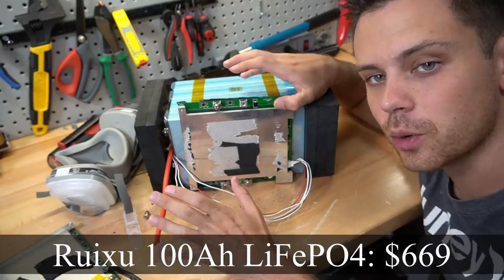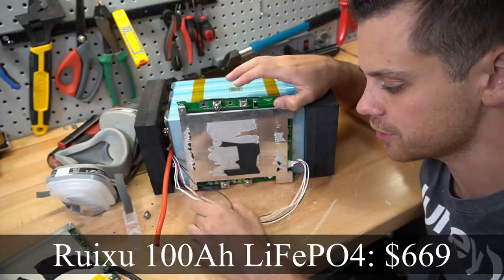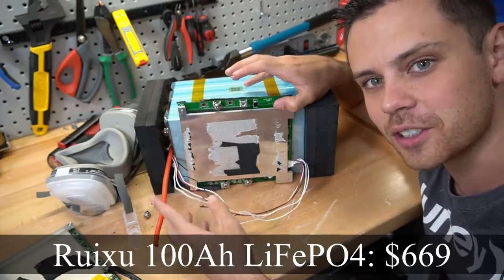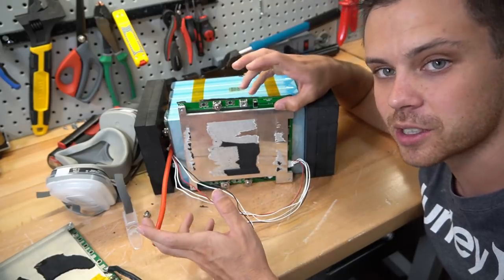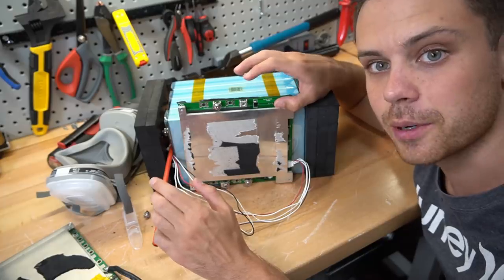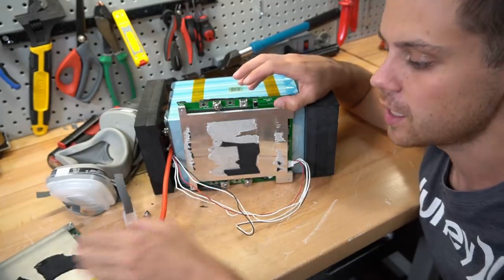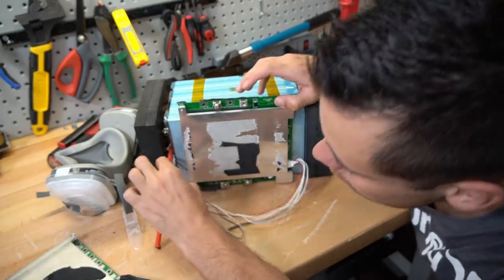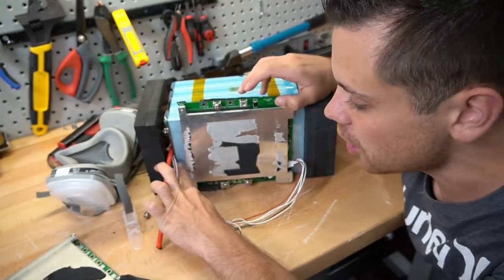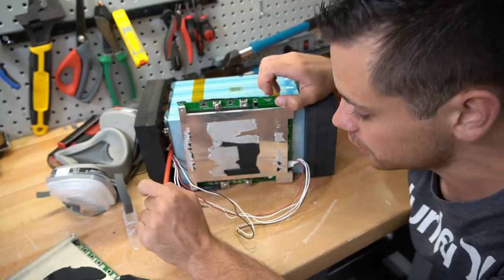So this is the new Ruxu 100 amp hour lithium iron phosphate. I wasn't interested in reviewing this, but I wanted to see what they updated. They promised my viewers and myself that they would have a low temperature charging protection BMS. This is pretty much the same BMS as they were using previously, but it's now updated with a temperature sensor, and we're going to open this up and see what that looks like.